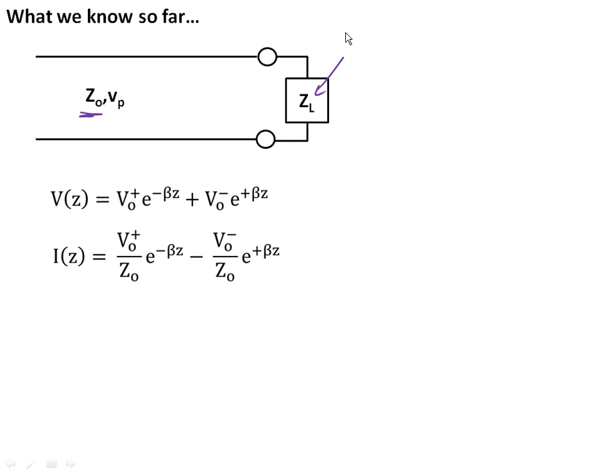We also know that we have two waves that are counter-propagating, one wave going in the positive direction, one wave going in the negative direction. We also have waves for current.